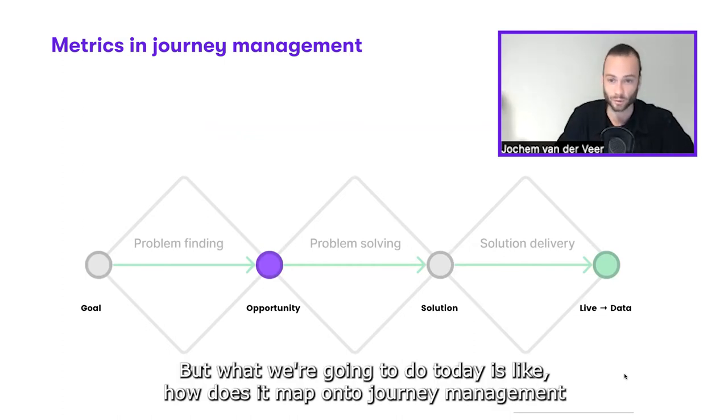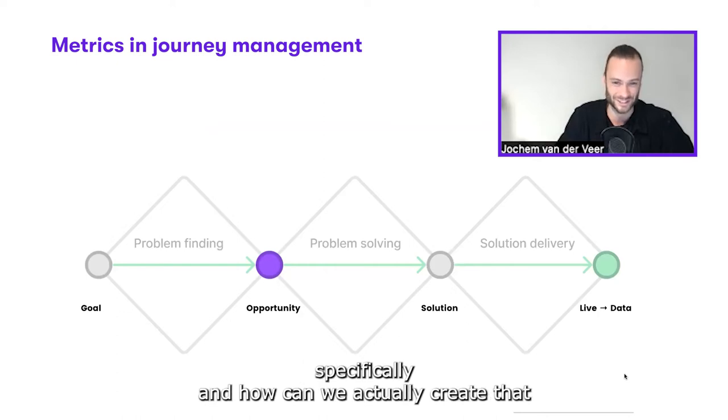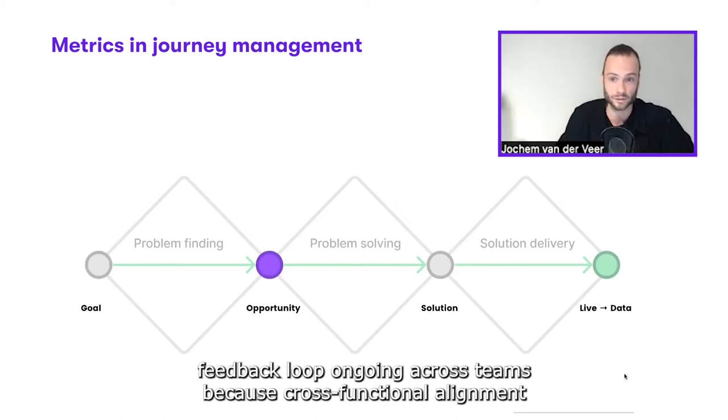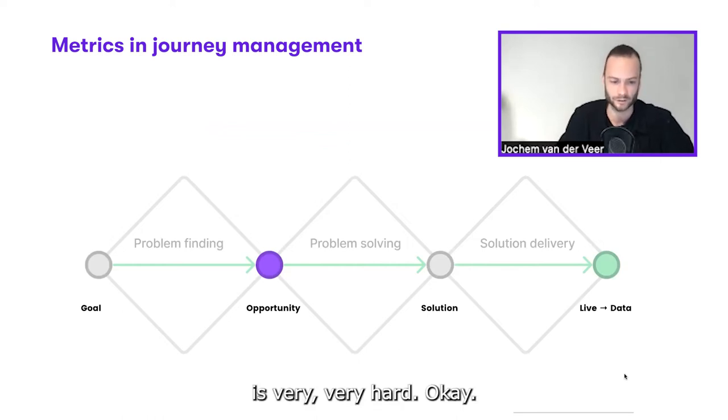What we're going to do today is, how does it map onto journey management specifically, and how can we actually create that feedback loop ongoing across teams? Because cross-functional alignment is very, very hard.